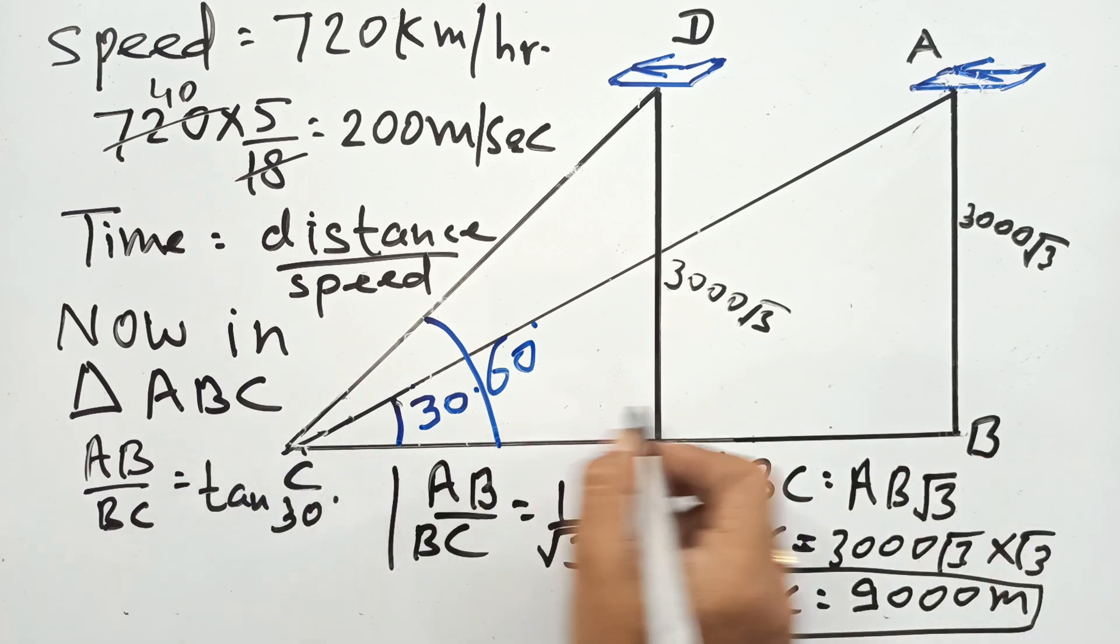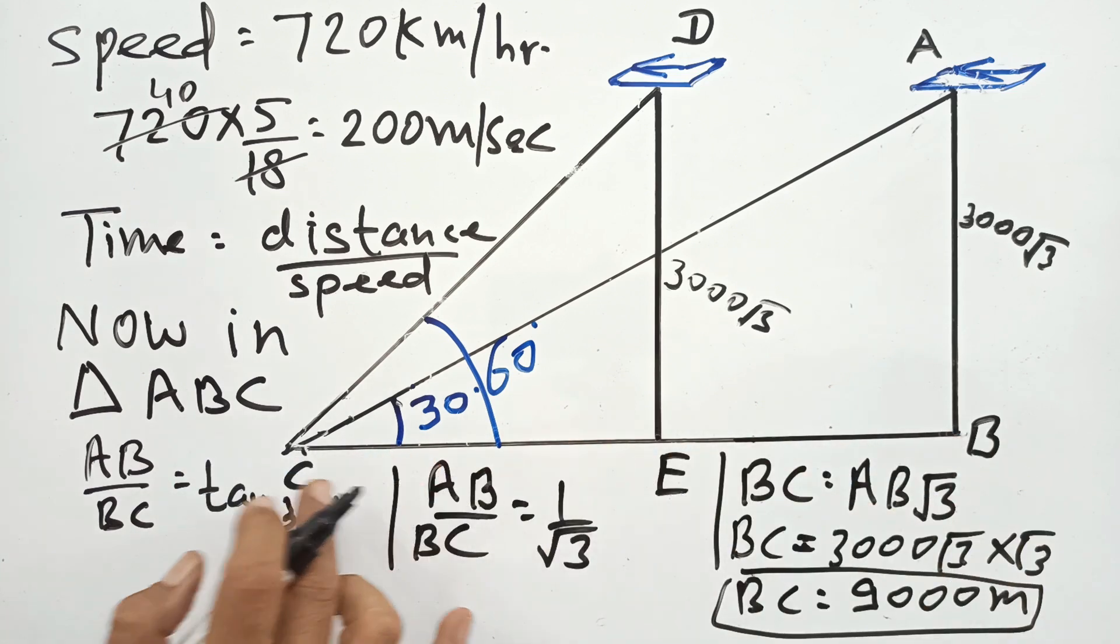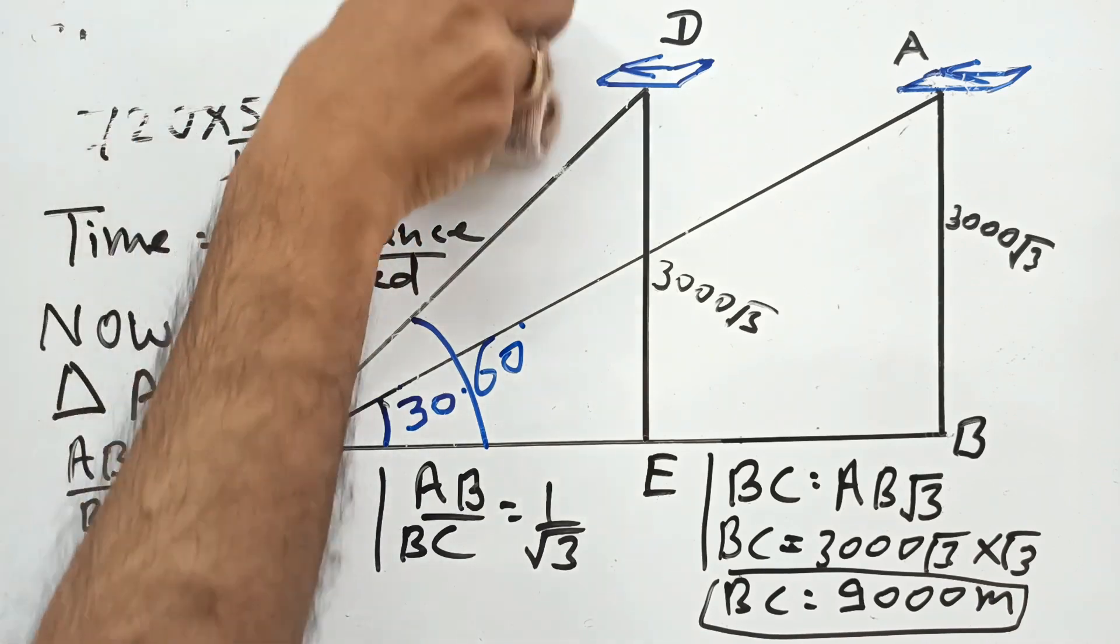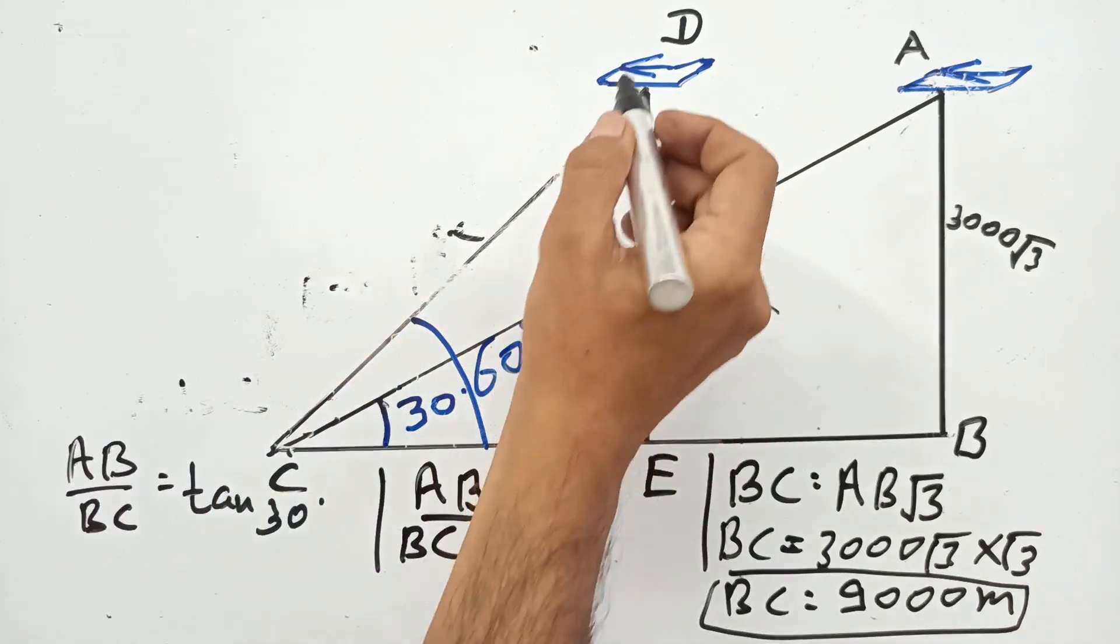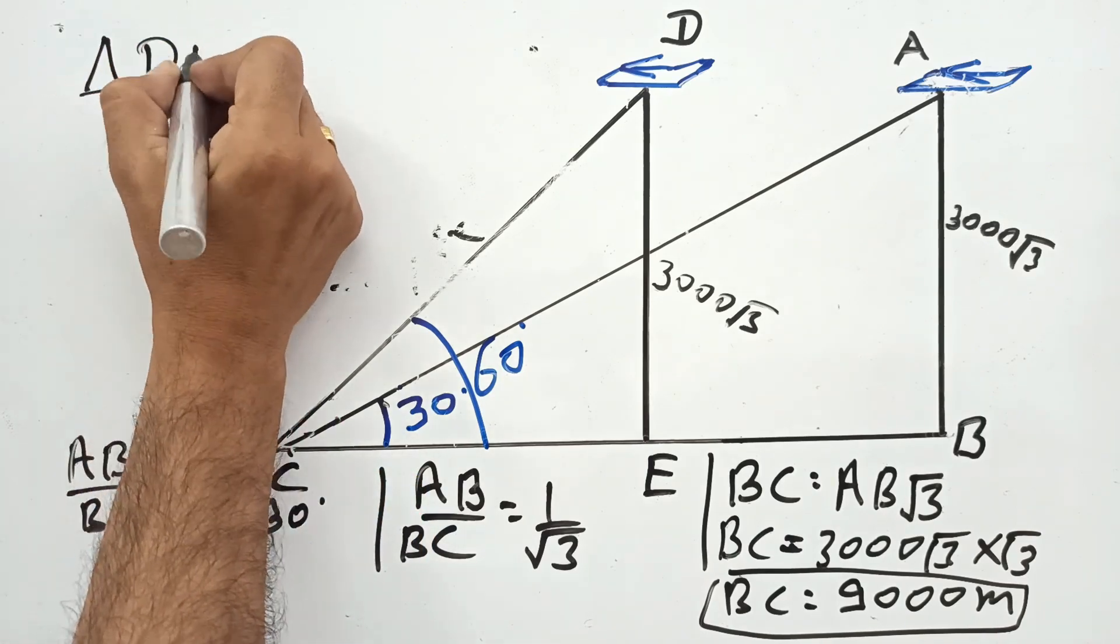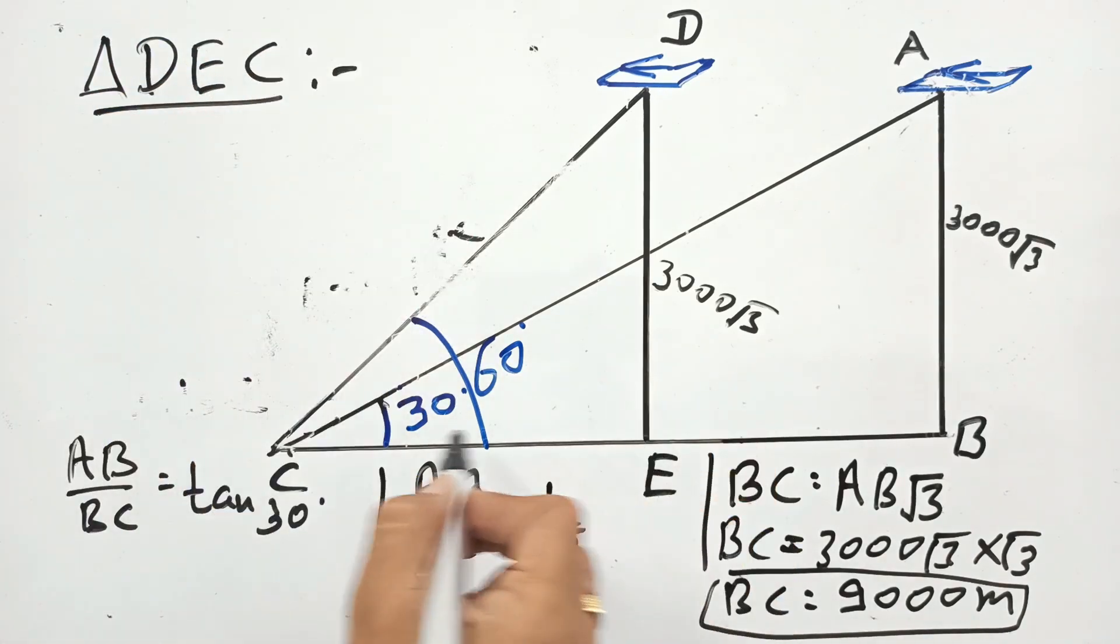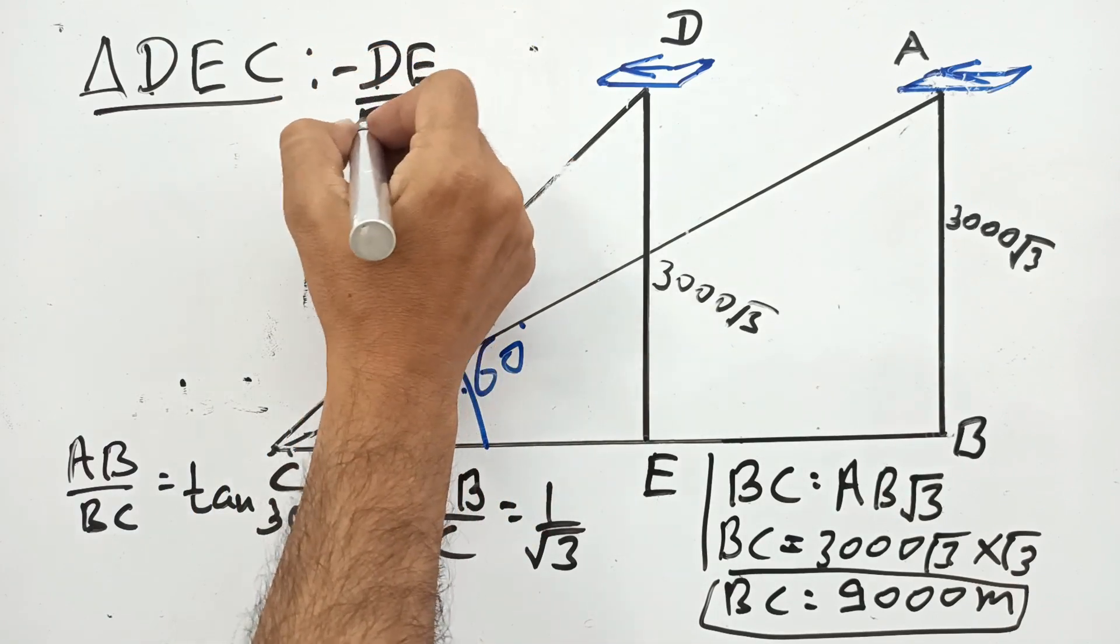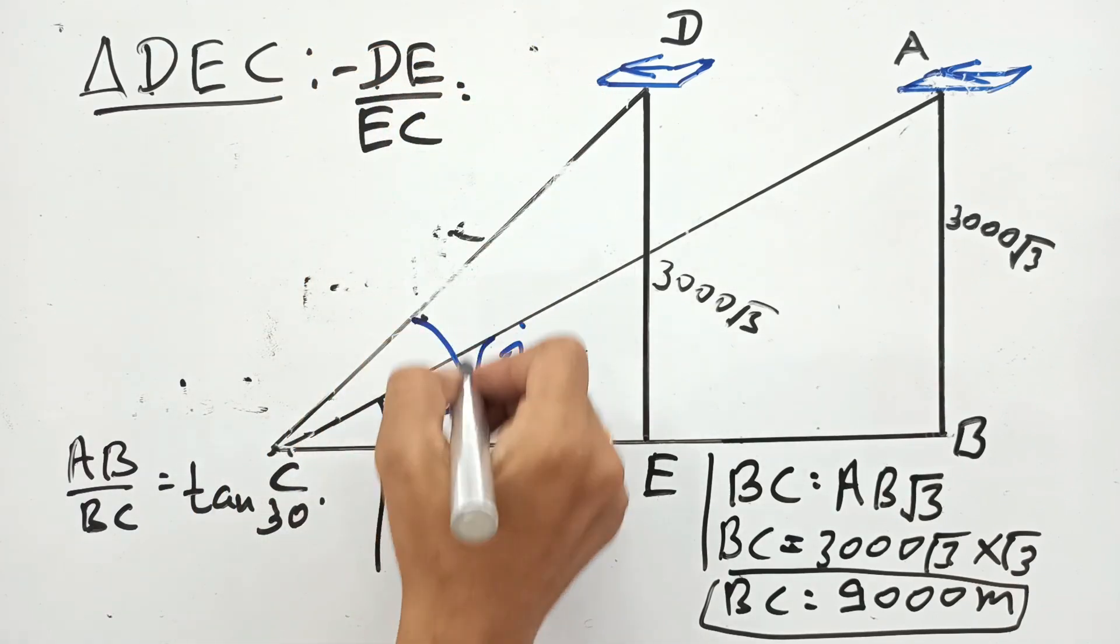Now we will find out EC. I'm erasing this one, you keep in mind or you can write and refer to this data. Now in triangle DEC, DE upon EC is equal to tan 60.